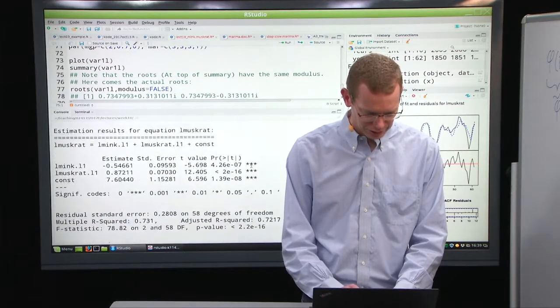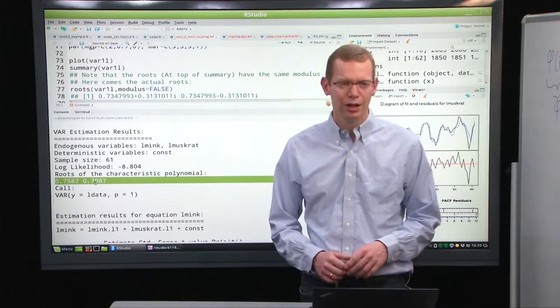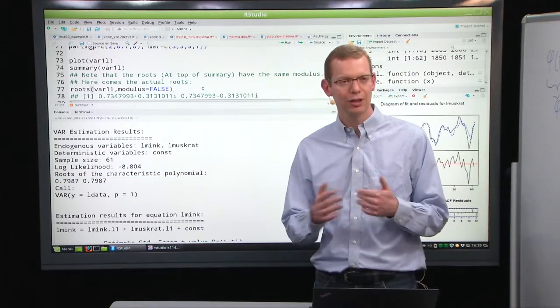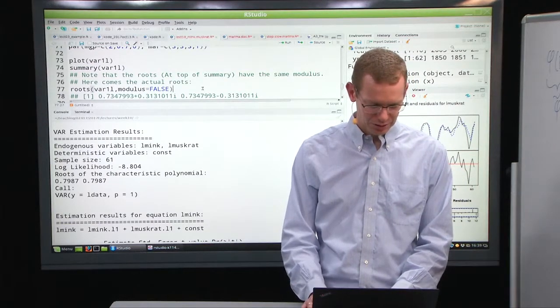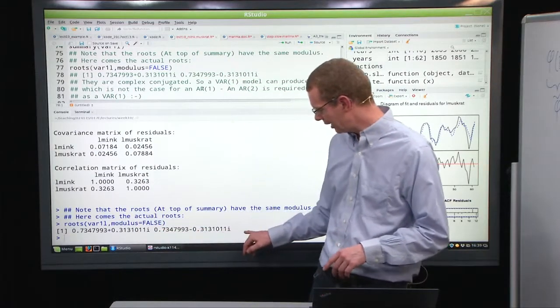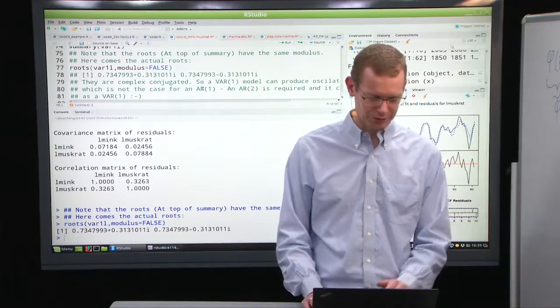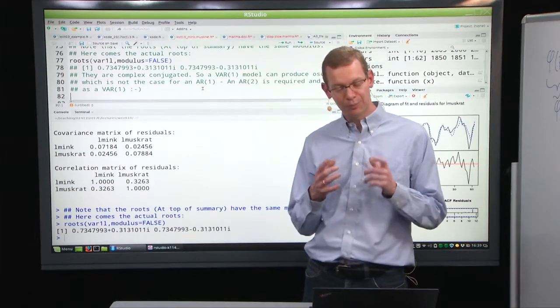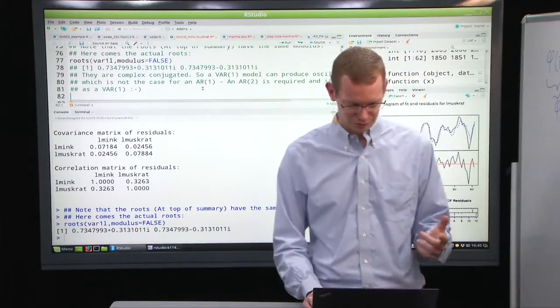So if we look again back at all the information that we get out here, we got also the roots of the characteristic polynomial up here that are around 0.8. But what we also saw was that it was oscillating. But we did not add a seasonal model to do that. The reason why is that those roots that are reported by the VAR model are the modulus here. If I do not say modulus equals false, then I get actually the actual values, and we see that these are complex conjugates, which means that we have oscillations because they're complex. So basically what we learned from that as well is having a bivariate AR1 model, you can have oscillations. Whereas if you are in the univariate case, you need at least an AR2 model to get oscillations.